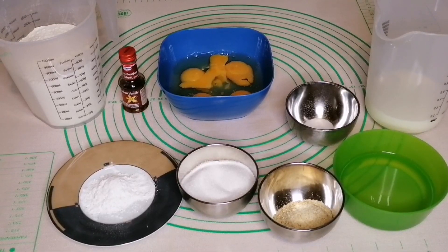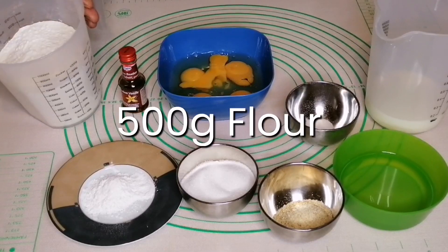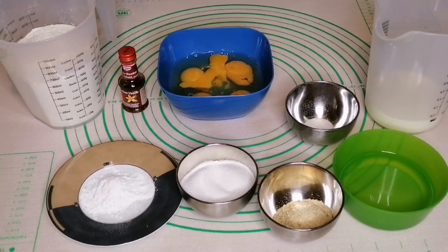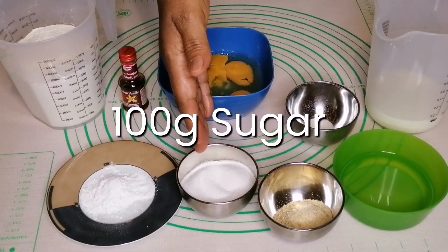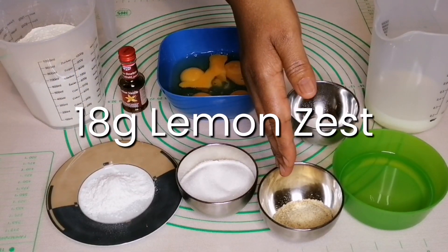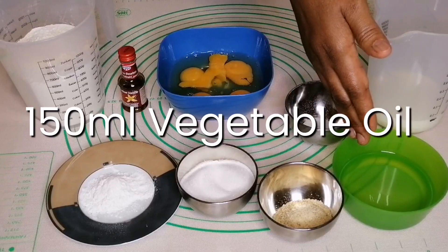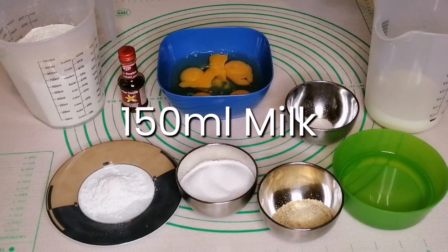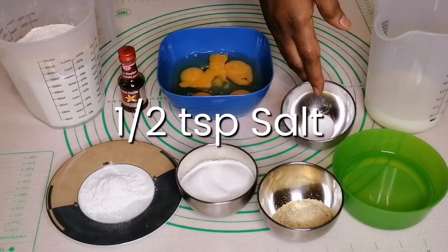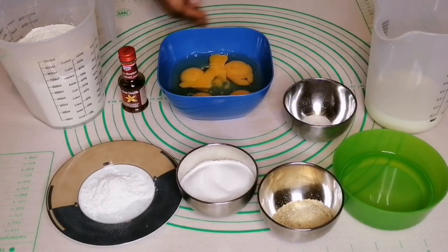The ingredients that we need today are 500 grams of flour, 15 grams of baking powder, 100 grams of sugar, 18 grams of lemon zest, 150 milliliters of vegetable oil, 150 milliliters of milk, half a teaspoon of salt, 5 whole eggs, and my vanilla extract.